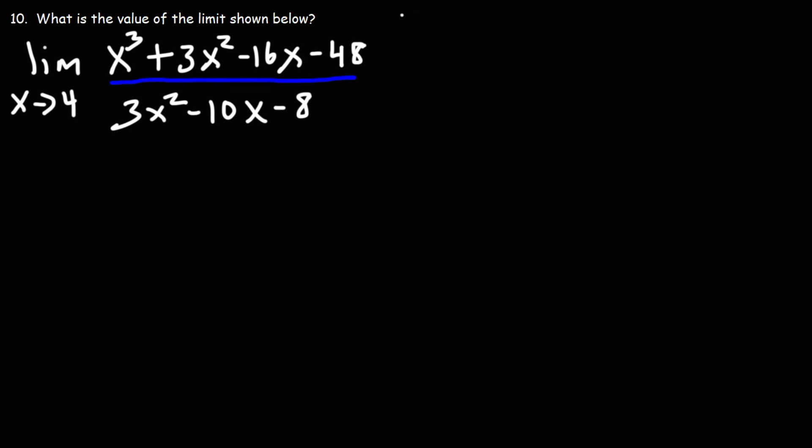So let's begin by factoring the trinomial on the bottom. Notice that the leading coefficient is not 1. So what we need to do is multiply the leading coefficient by the constant term. 3 times negative 8 will give us negative 24. And then we need to find two numbers that multiply to 24 but add to the middle coefficient negative 10.